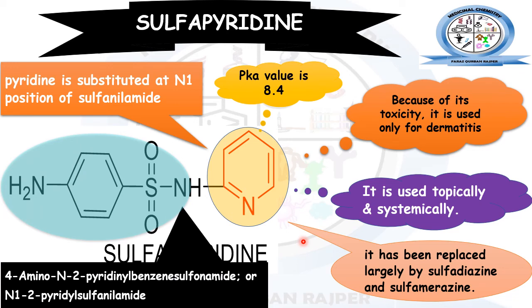The IUPAC name for sulfapyridine is 4-amino-N-(pyridin-2-yl)benzenesulfonamide. This represents the 4-amino region and the N2-pyridine sulfonamide region. It can also be described as an N1-pyridine sulfonamide, meaning an N1-substituted pyridine derivative of sulfonamide.